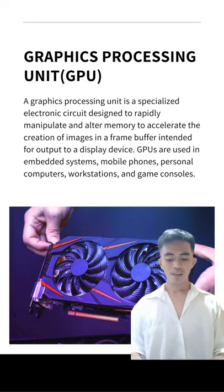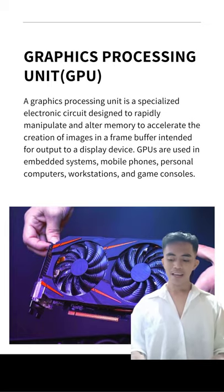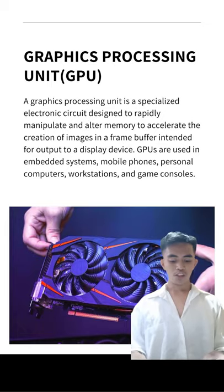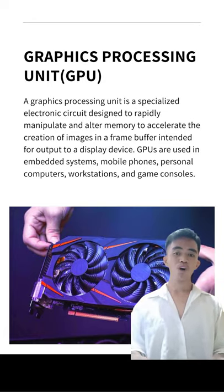Next is the graphics processing unit or GPU. A graphics processing unit is a specialized electronic circuit designed to rapidly manipulate and alter memory to accelerate the creation of images in a frame buffer intended for output to a display device. GPUs are used in embedded systems, mobile phones, personal computers, workstations, and game consoles.